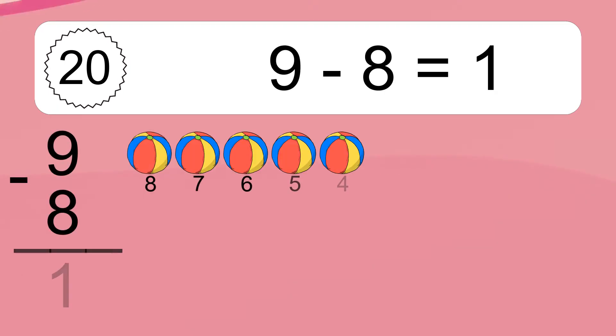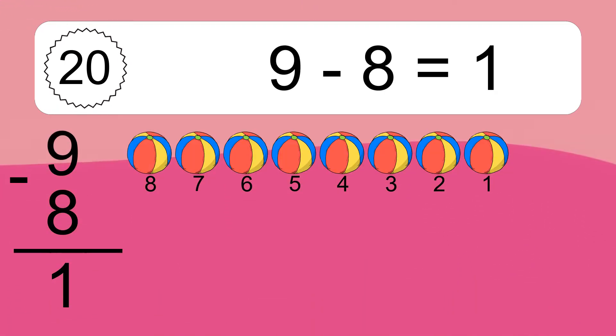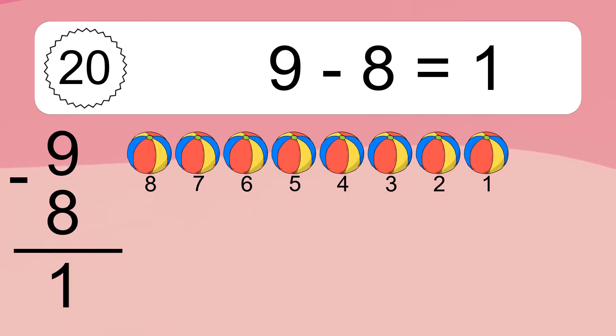9 minus 8 equals 1. Let's count it: 8, 7, 6, 5, 4, 3, 2, 1.